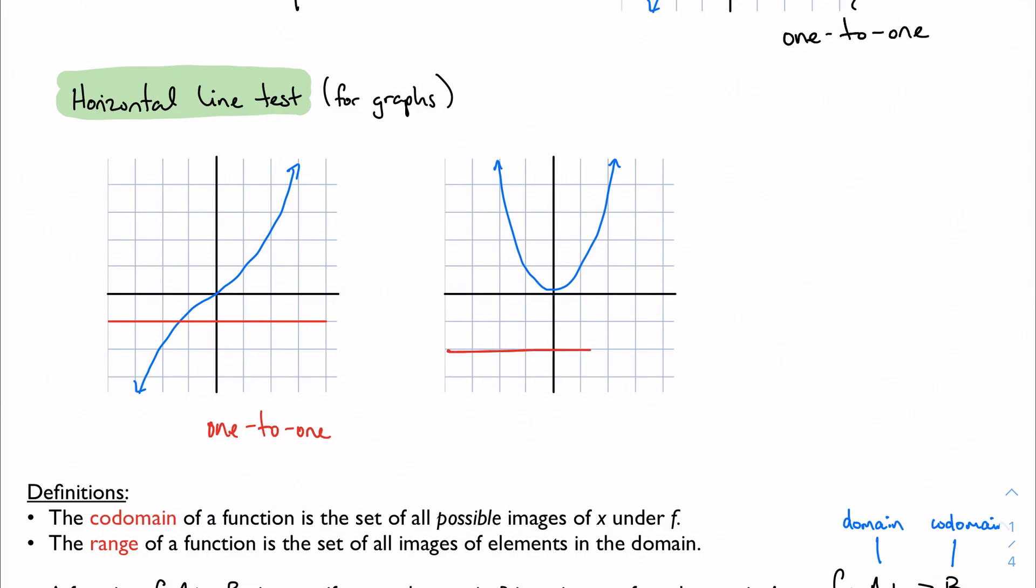However, if I take my horizontal line and try to pass it through my graph at any point, you see that I have intersections in multiple places at the same time. Well, that's a problem, and then it's not one-to-one, and it's what the book would call many-to-one.